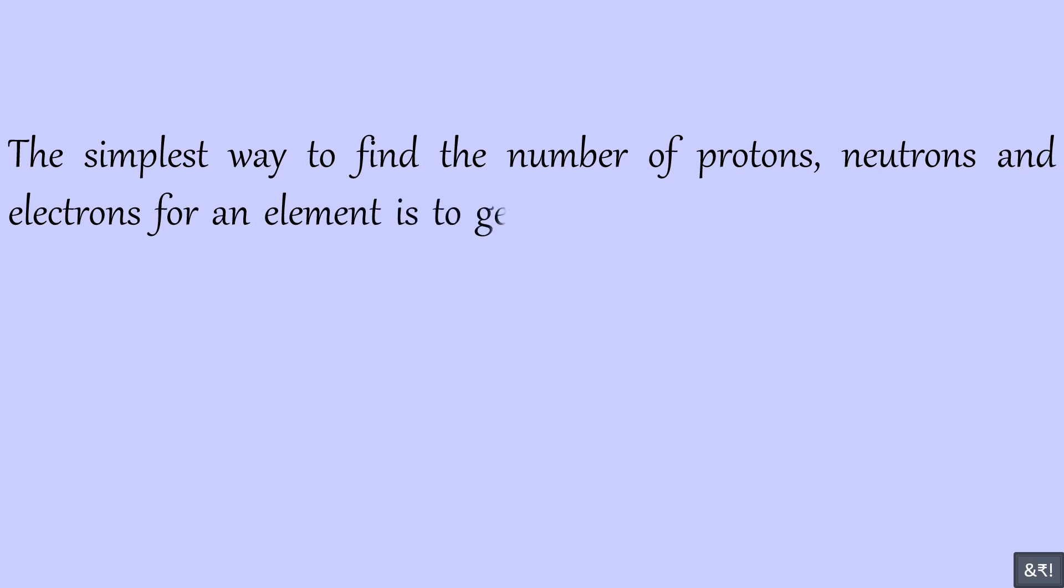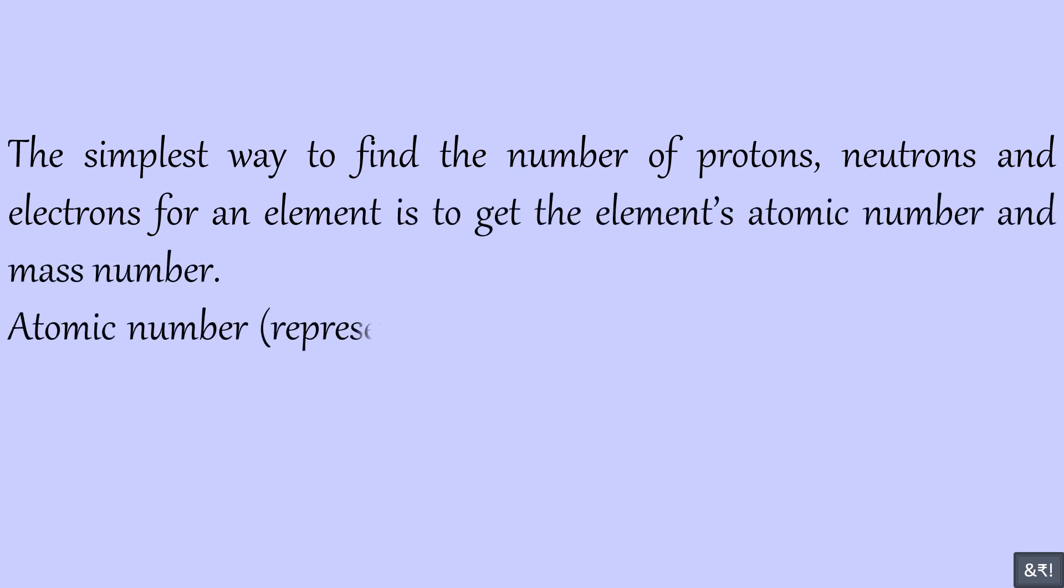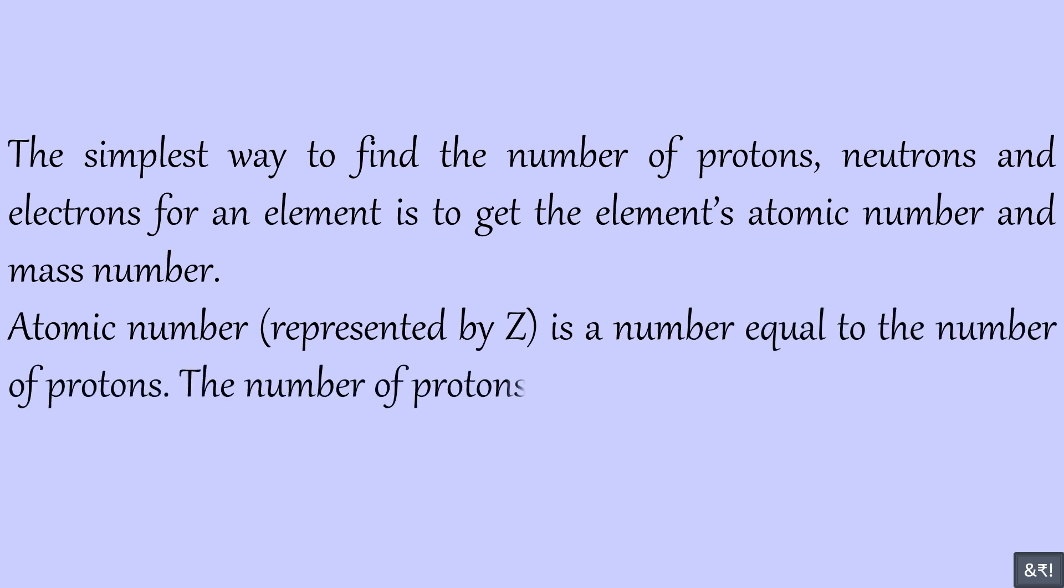The simplest way to find the number of protons, neutrons and electrons for an element is to get the element's atomic number and mass number. Atomic number, represented by Z, is a number equal to the number of protons. The number of protons is equal to the number of electrons in an atom.